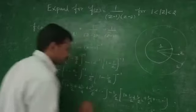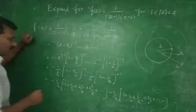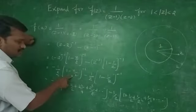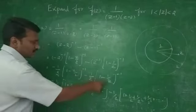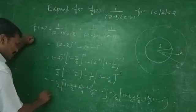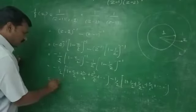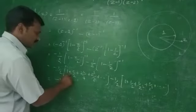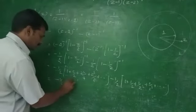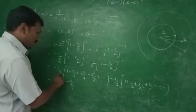For Z, we have 1/Z. We can also write minus 1/2 into (1 - Z/2), which gives Z/2 minus Z²/4 plus Z²/8...